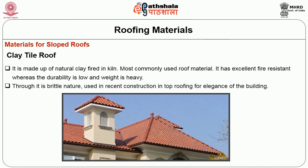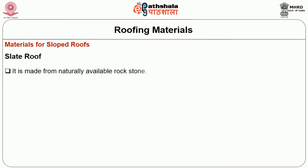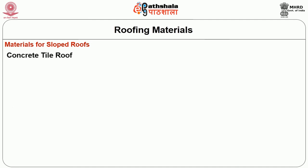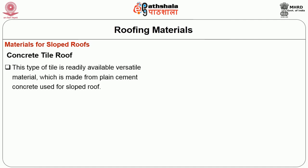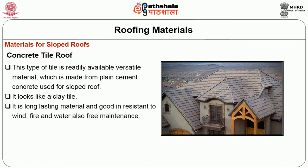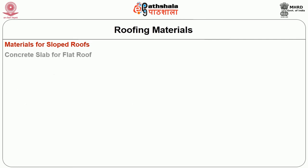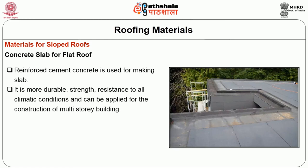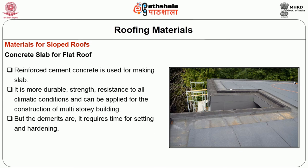Clay tiles are used in recent construction for top roofing for elegance of the building. Slate roof is made from naturally available rock stone; it is impervious to moisture and fire but expensive due to the energy required. Concrete tile roof is a versatile material made from plain cement concrete used for sloped roofs. It looks like a clay tile, is long-lasting and has good resistance to wind, fire and water with free maintenance. Concrete slab for flat roofs uses reinforced cement concrete and is more durable, strong and resistant to all climatic conditions, suitable for multi-storey buildings. Its demerits are that it requires time for setting and hardening, and continuous curing is necessary.